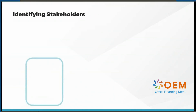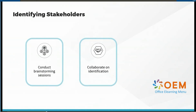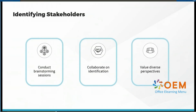To begin with, let us explore the first process for identifying stakeholders: brainstorming sessions. This involves gathering your project team and other key individuals to list all potential stakeholders. This collaborative approach ensures that no important stakeholder is overlooked. For example, in a construction project, stakeholders might include architects, engineers, local government officials, and community members. By involving diverse perspectives, you can create a comprehensive list of stakeholders.